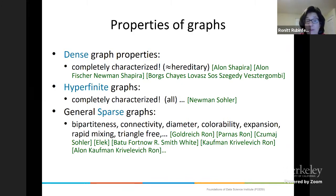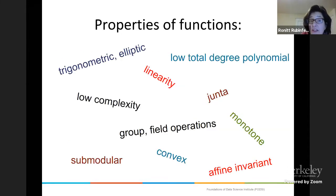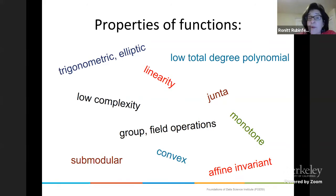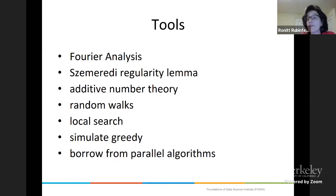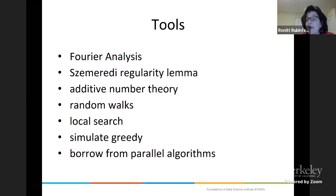For general sparse graphs, there's been a lot of research but it's more problem by problem — we don't have a general characterization, and this is an area currently being worked on. There's a lot of work on triangle-free and estimating diameter. For properties of functions, many have been considered: linearity, convexity, submodularity, low complexity, low-degree polynomials, and monotonicity. The tools used come from all over: Fourier analysis, the Szemerédi regularity lemma, additive number theory, probability and random walks, local search, and simulating greedy and parallel algorithms.